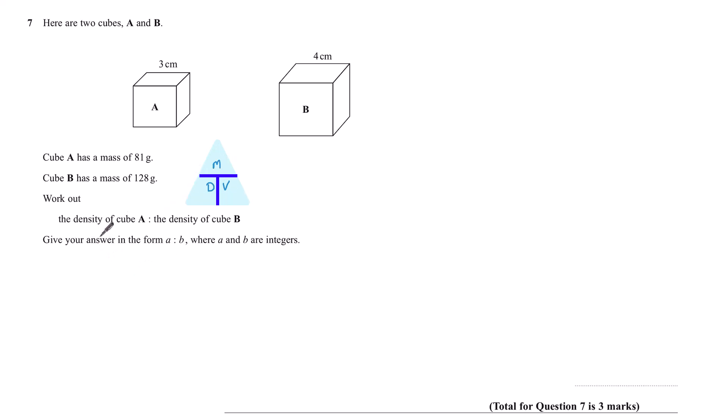In this case I want density. So the density, if we look at cube A, is going to be its mass, which is 81, divided by its volume, which for this 3cm sided cube is 3 cubed. And so the density of cube A is 81 over 27, which is 3.